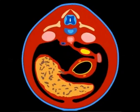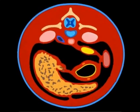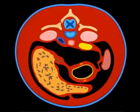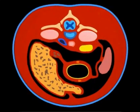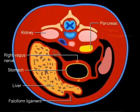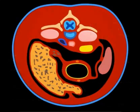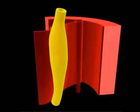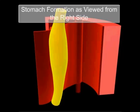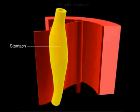The 90-degree clockwise rotation results in the left side of the stomach facing anteriorly and its right side posteriorly. This explains why the left vagus nerve innervates the anterior wall whereas the right vagus nerve innervates the posterior wall. Cellular proliferation occurs much faster in the posterior wall of the stomach than in the anterior wall, resulting in the formation of the greater and lesser curvatures respectively.